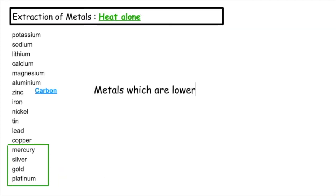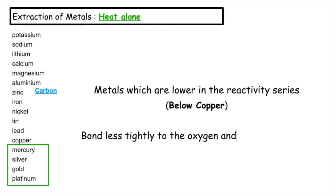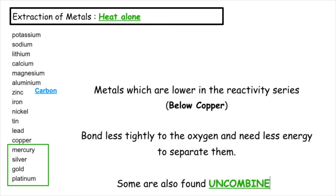Metals which are lower in the reactivity series below copper bond less tightly to the oxygen and need less energy to separate them. Some metals are also found uncombined, meaning that they don't bond with oxygen and exist as the metal atom alone.